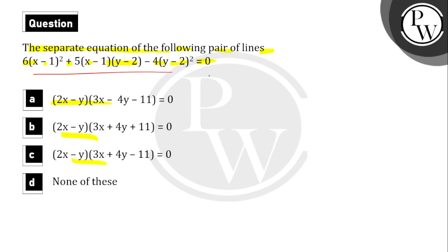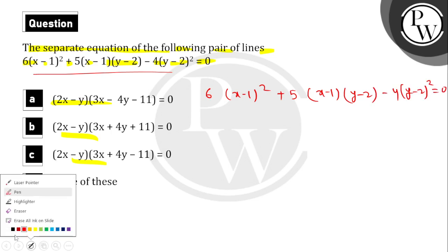Here we have a pair of lines given, and we need to find the separate equations. We have 6(x-1)² + 5(x-1)(y-2) - 4(y-2)² = 0. The approach is to add and separate by introducing 3(x-1)(y-2) and subtracting it. This is how we can solve our equation.